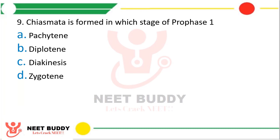Question 9: Chiasmata is formed in which stage of prophase 1? Option A: Pachytene. Option B: Diplotene. Option C: Diakinesis. Option D: Zygotene. As you must be knowing, meiosis is divided into meiosis 1 and meiosis 2, with prophase 1 having 5 stages: leptotene, zygotene, pachytene, diplotene, and diakinesis. The correct answer is Option B, diplotene. In the diplotene stage, chiasmata formation occurs.